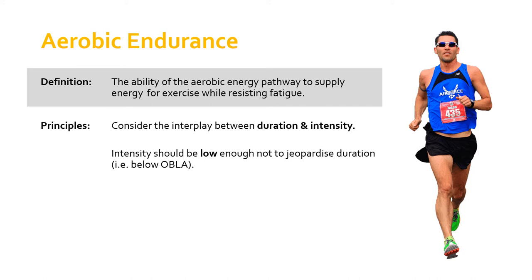In order to do that, we need to be training below what's known as the OBLA. The OBLA is the point at which blood lactate starts to accumulate so rapidly that we can no longer break it down and get rid of it — essentially the point at which we're no longer predominantly working aerobically. OBLA stands for the Onset of Blood Lactate Accumulation. It's the point at which we cross over from training aerobic endurance into training muscular endurance — there's almost a threshold or tipping point between the two.